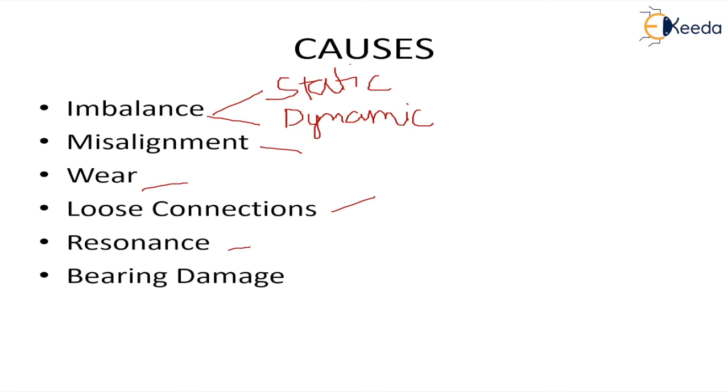The next factor is resonance. When the natural frequency of vibration of any machine system coincides with external excitation, this condition of resonance occurs. In this, the amplitude of vibrations is very large and it can lead to failure of the system or machine. Bearing damage can also lead to vibrations.